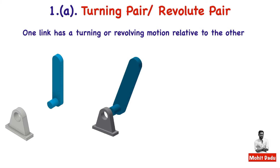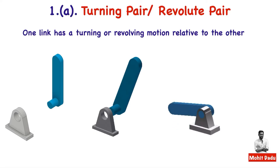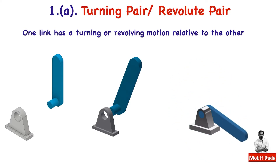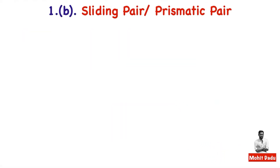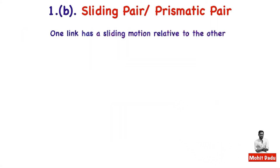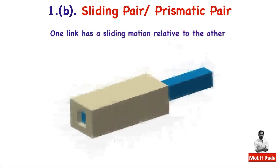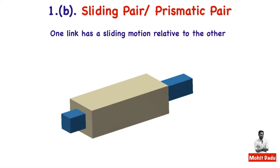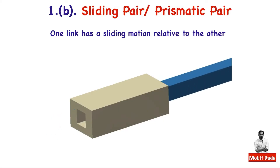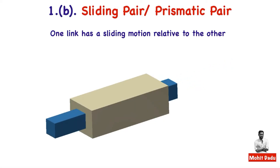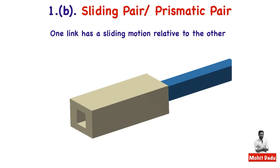In a turning pair, one link turns or revolves with respect to the other. The next type is the sliding pair, where one link slides with respect to the other. A rectangular prism is inserted into a rectangular slot so that it slides relative to the other link.